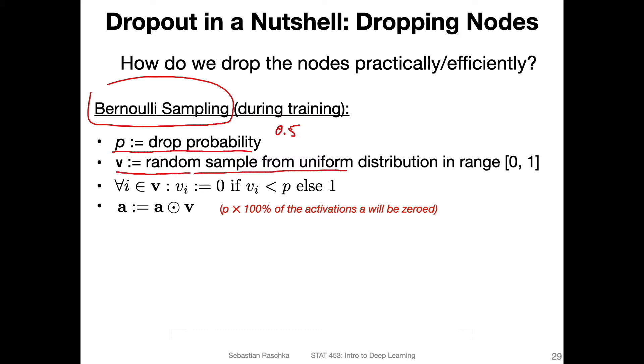For that, we define a drop probability p, for example 0.5. With that probability for each given node, it's the probability that we drop that node. We create a vector—a random sample from a uniform distribution in the range [0, 1]. This vector will have the same number of elements as the size of the hidden layer. Dropout is only applied to hidden layers, not the output layer. Now we apply Bernoulli sampling where for each value vi, we set it to zero if it's smaller than the drop probability, otherwise we set it to one.